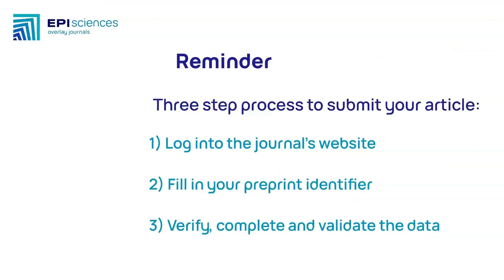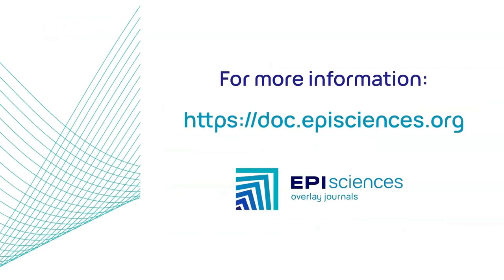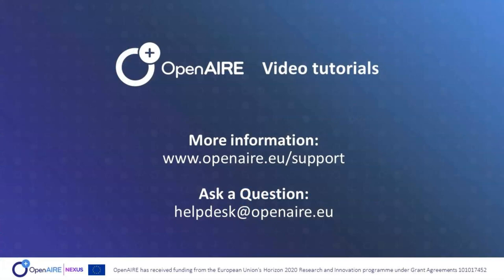Reminder: three-step process to submit your article. Step 1: Log into the journal's website. Step 2: Fill in your preprint identifier. Step 3: Verify, complete, and validate the data. For more information, please consult the documentation on Episciences' website.